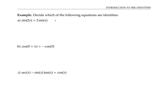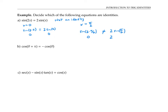The first equation is not an identity. It does hold for some values of x — for example, if x equals zero, then sine of two times zero is zero, and two times sine of zero is also zero. However, when x is pi over two, sine of two times pi over two is the same thing as sine of pi, which is zero. But two times sine of pi over two is two times one, or two — and zero is not equal to two. So the equation does not hold for x equals pi over two. Since it doesn't hold for all values of the variable, it's not an identity.